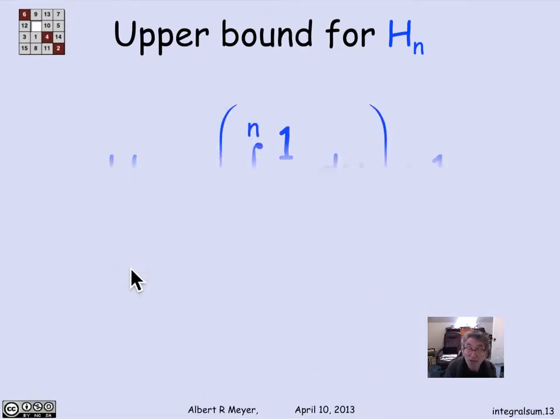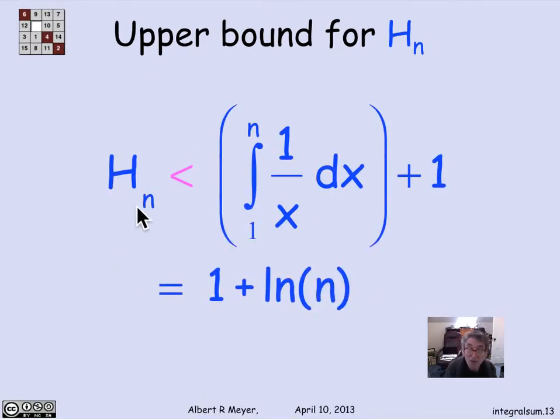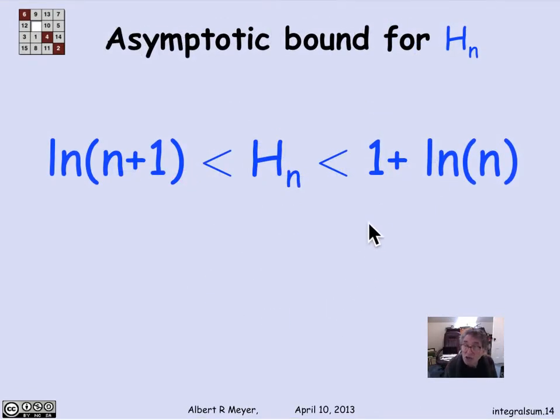And so I get an upper bound that says that the harmonic number H_n is less than the integral from 1 to n of 1/x dx plus 1, or it's equal to 1 plus log(n). So combining those two bounds that I got by looking at a curve that's a lower bound on the area and a curve that's an upper bound on the area and integrating, I discovered that H_n is bracketed between the natural log of n+1 and 1 plus the natural log of n.